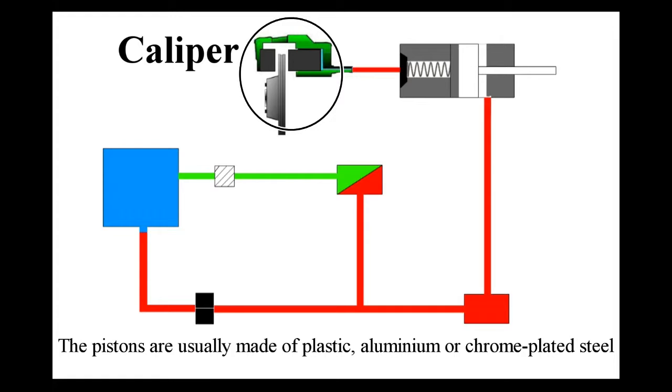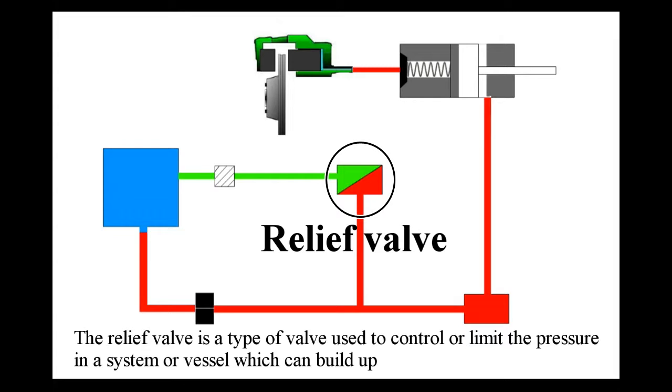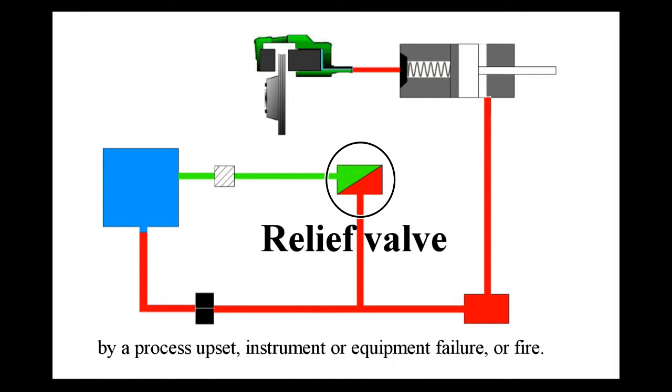The pistons are usually made of plastic, aluminum, or chrome steel. The relief valve is a type of valve used to control or limit the pressure in a system or vessel which can build by a process upset, instrument or equipment failure, or fire.